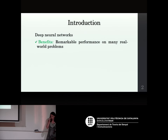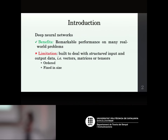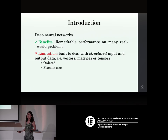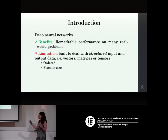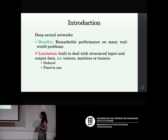Deep neural networks are really good at many real-world problems, but they are limited to structured inputs and outputs. We need vectors, matrices, or tensors that are ordered and fixed in size. For example, an image has a fixed size, and we typically want a fixed-size output — such as predictions for a fixed number of classes for image classification.